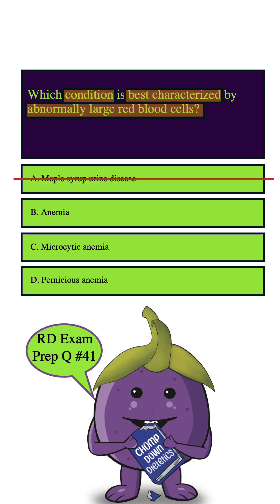Let's eliminate microcytic anemia and move on to D. Because microcytic anemia is listed, it would be natural to assume that macrocytic anemia would be listed as well, but it's not. Instead, we have pernicious anemia.